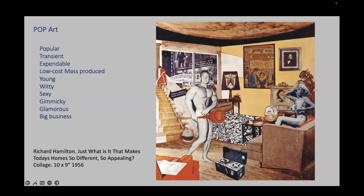Although pop art flourished most prominently in the United States, it initially appeared in London, where young artists began creating collages using images cut from popular magazines. English artist Richard Hamilton played a pivotal role in defining pop art with his 1957 list of characteristics addressing the qualities of contemporary mass culture that these artists aimed to critique. Hamilton's collage Just What Is It That Makes Today's Homes So Different, So Appealing exemplifies this approach, incorporating elements from comic strips, advertising layouts, famous brand packages, and other visual clichés of the mass media. The movement derived its name from the word 'pop,' prominently displayed on a giant lollipop in the collage, reflecting its focus on popular culture and mass media imagery.